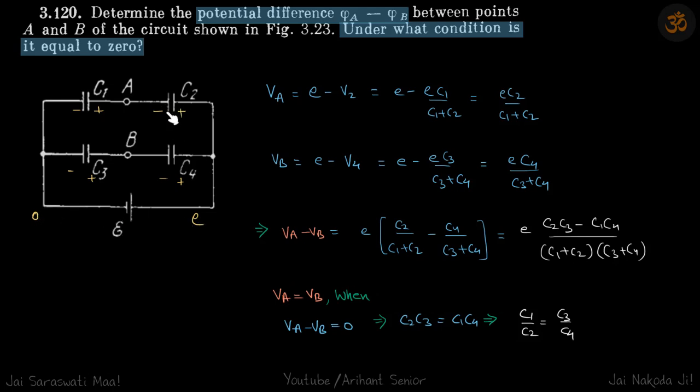If you go like this, then the potential of A is E minus V2. So VA equals E minus V2. Similarly, VB equals E minus V4.